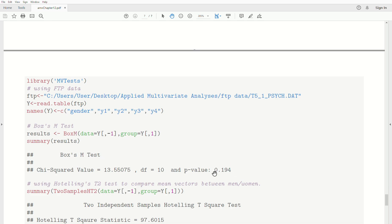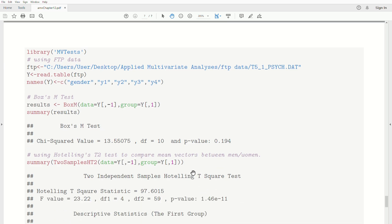P-value 0.19, which is not significant. And so we'll assume that the covariance matrices are equal, which then allows us to do Hotelling's T-squared test to compare the mean vectors between men and women.